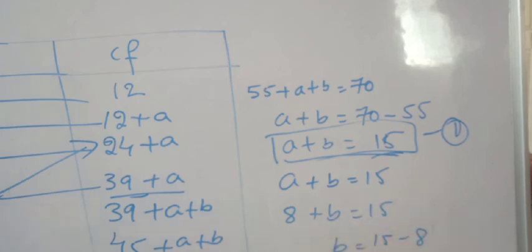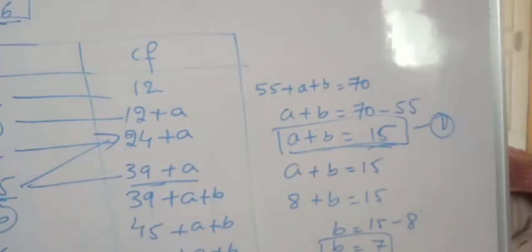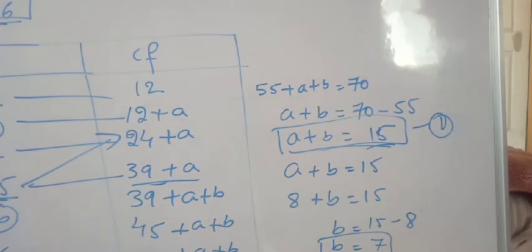So A equals 8. Since A+B = 15, B equals 15-8 = 7. Therefore, the frequency A is 8 and B is 7. Thanks for watching, bye!